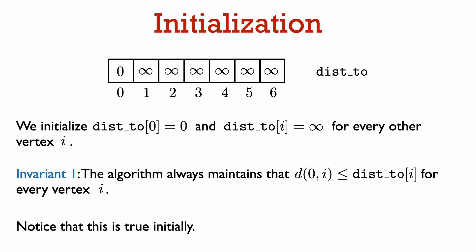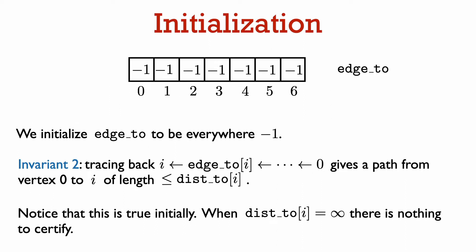There are two invariants that our generic algorithm is going to maintain as it runs. The first invariant is that dis2[i] is always an upper bound on the actual distance from vertex zero to vertex i. Note that this is true initially given the way we initialize the dis2 array. The second invariant is that tracing back from vertex i in the edge array realizes a path from vertex zero to vertex i whose length is at most dis2[i].